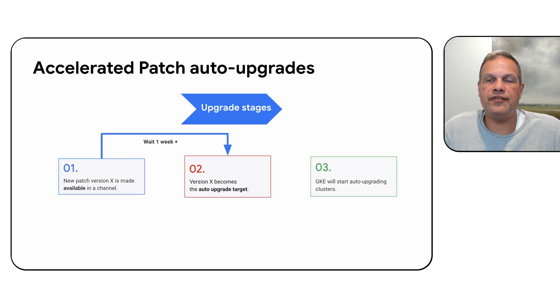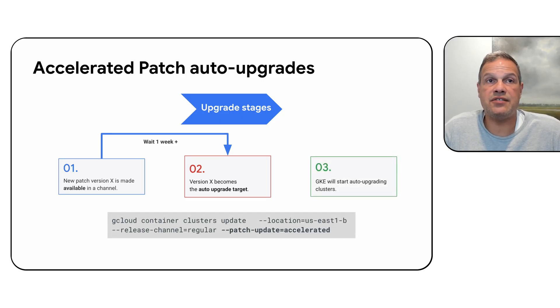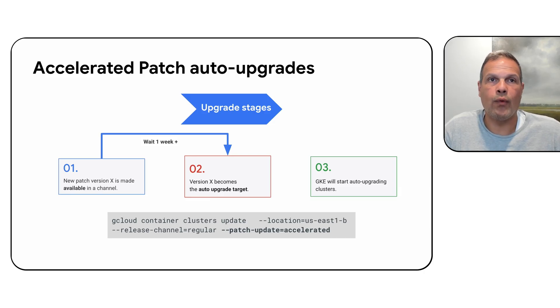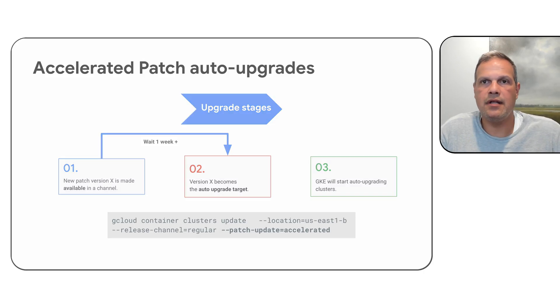In order to use this feature, it's quite simple — just use the --patch-update=accelerated flag. You can do this when creating clusters or when updating clusters, and then your upgrades will kick off immediately when a new patch is available on your channel.